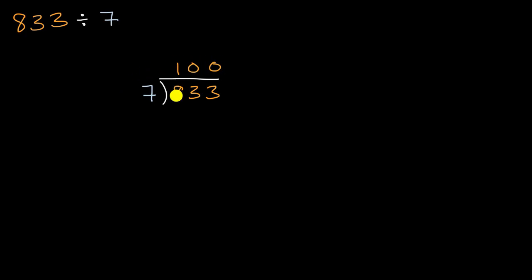You could view this column as the hundreds column, this is the tens column, this is the ones column. And then we want to see how much do we have left over? How close did seven times 100 get us? So what we do is we multiply 100 times seven to get 700. And then we can subtract that 700 from 833 to figure out how much more we have left. And so 833 minus 700 is 133.